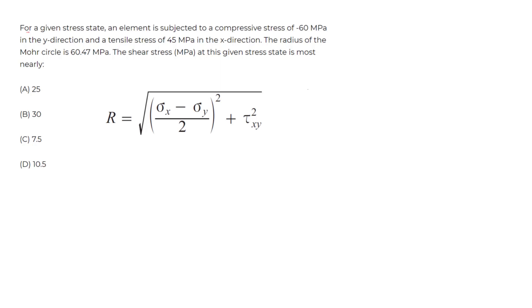We're told here for a given stress state, an element subjected to a compressive stress of negative 60 MPa in the y direction and a tensile stress of 45 MPa in the x direction. The radius of the Mohr's circle is 60.47 MPa. The shear stress in MPa at this given stress state is most nearly what? So we need to pick that answer.